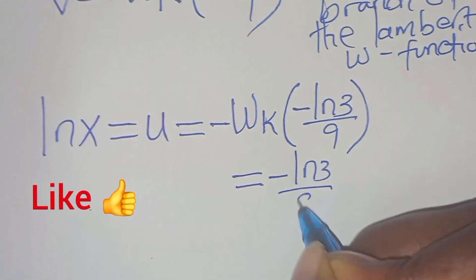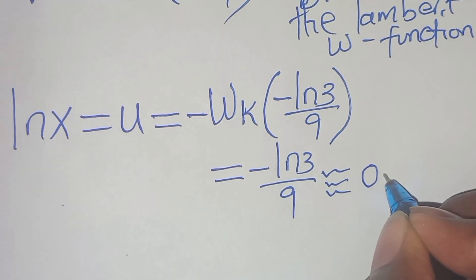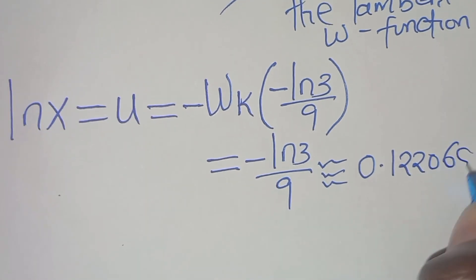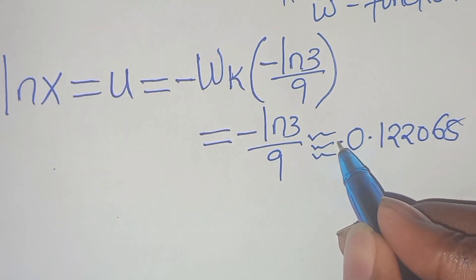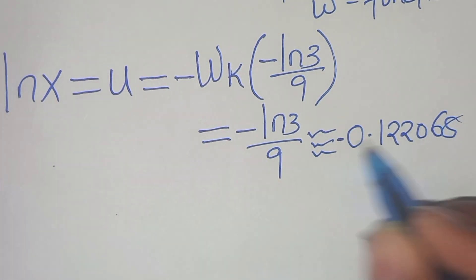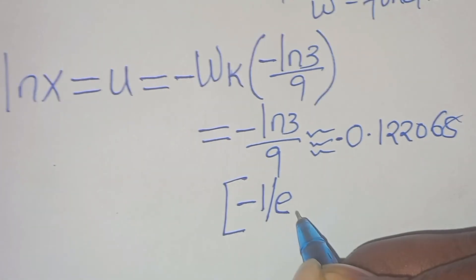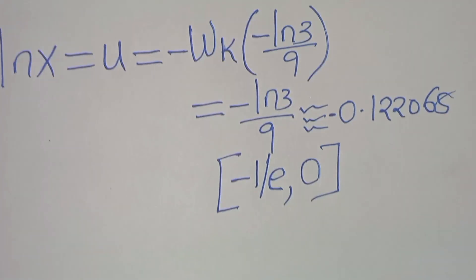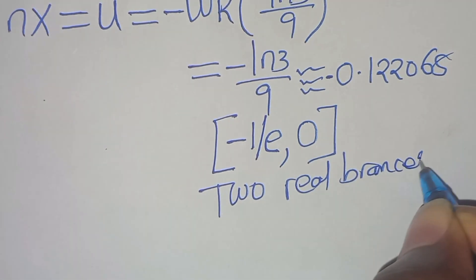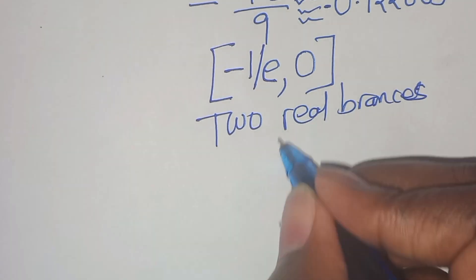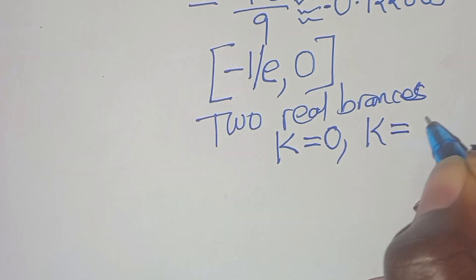Now, minus ln(3) divided by 9 is approximately 0.122068. This implies that the value here, minus 0.122068, lies between minus 1 over e and 0. This implies that there are two real branches: k equal to 0, and k equal to minus 1.